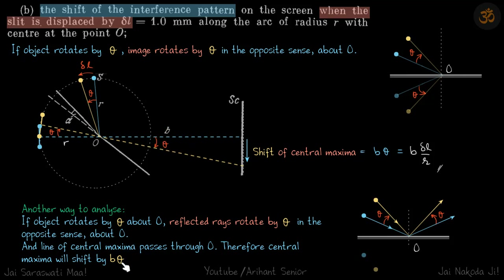So the line of central maxima — since it passes through O — means the central maxima will shift by B·theta. We could have done that directly without the diagram at all. From near the point of intersection, all light rays are now at an angle theta with the original ray, so if the original maxima was here, the new maxima will be at a distance B·theta from this point, and theta equals delta L over R.